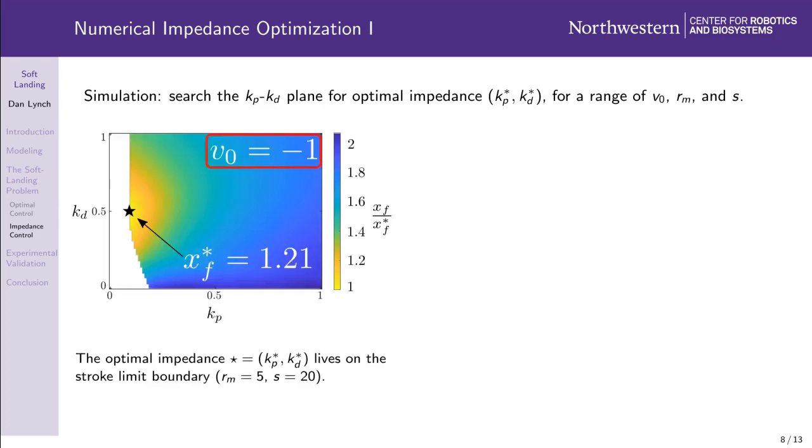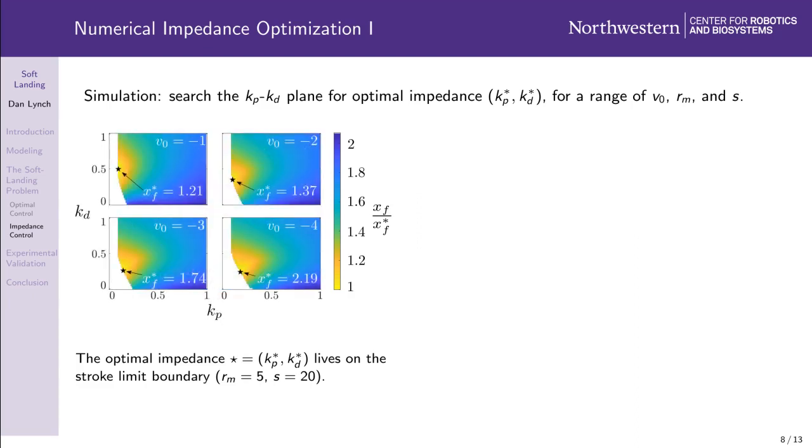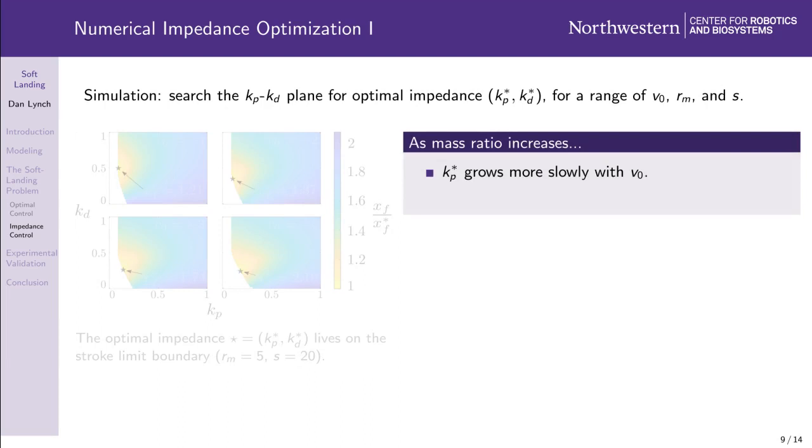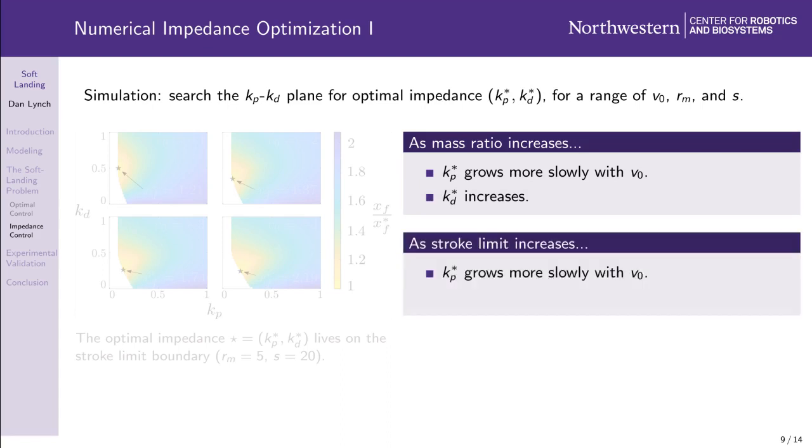The color maps on the left show how the optimal impedance, represented by a star, changes as impact velocity grows, for a mass ratio and dimensionless stroke limit that correspond to our experimental apparatus. Notice that the optimal impedance lives on the edge of the colored region, indicating that the robot uses its entire available stroke to minimize foot penetration depth. As the body grows increasingly heavier than the foot, the optimal stiffness grows more slowly with impact velocity, and the optimal damping increases. As the stroke limit increases, the optimal stiffness again grows more slowly with impact velocity, as does the optimal damping. These results suggest that impedance control can best transfer momentum from the foot to the body when the mass ratio and stroke limit are both large.